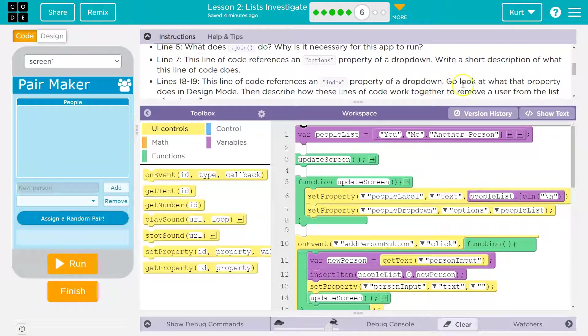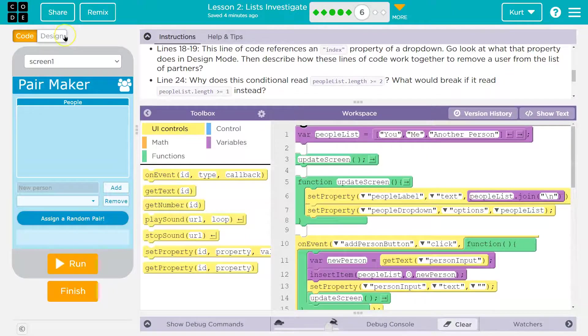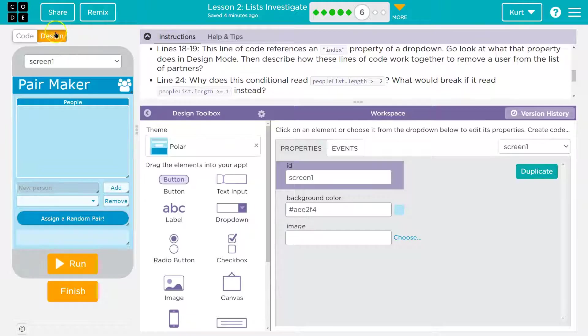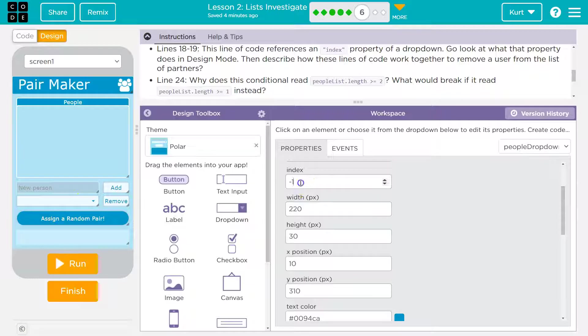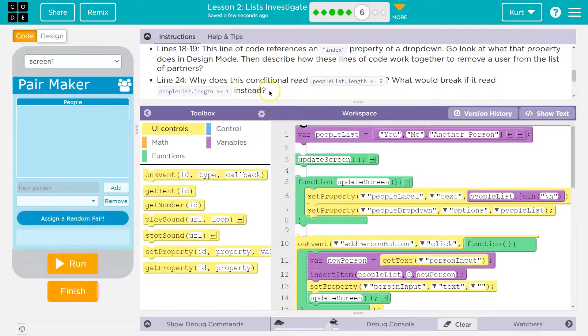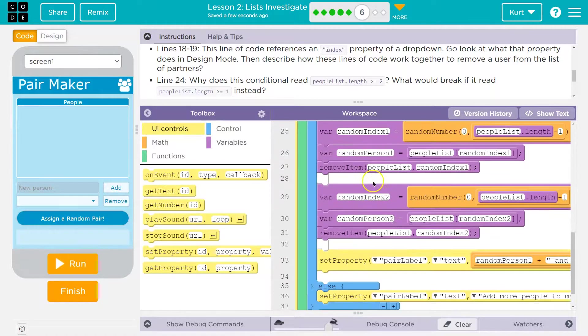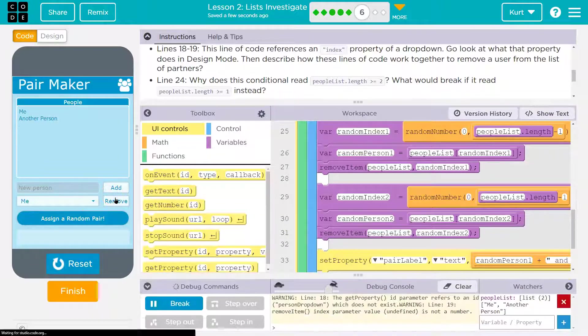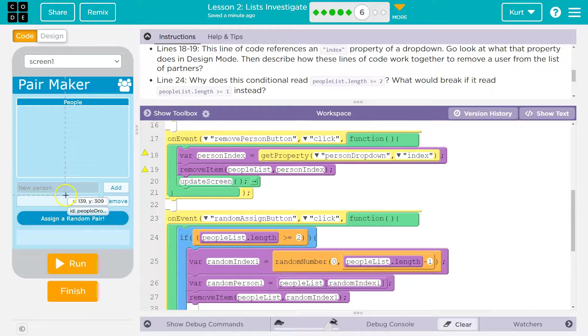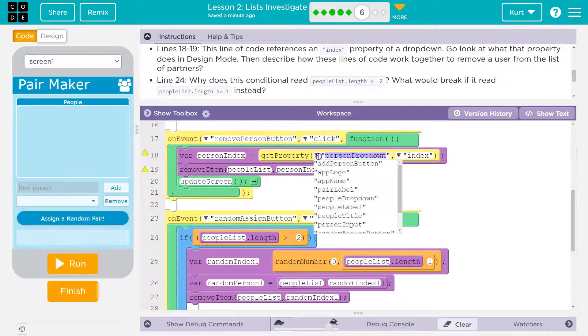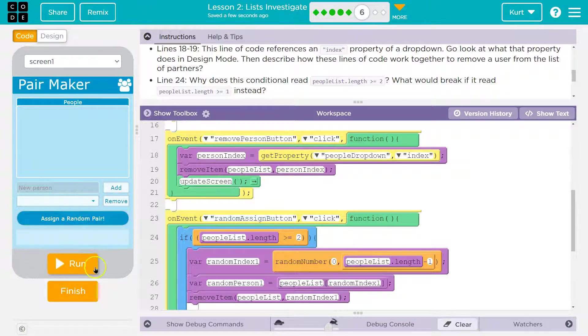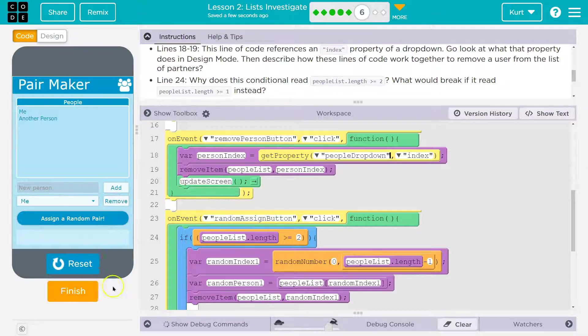The code refers to index property of a dropdown. Go look at what the property does in design mode. Then describe these lines of code work together to remove a user from the list of partners. Okay. So here's the design mode. Here's our people drop down. Index is negative one right now because there's no one on the list. And then what's it saying? Oh, how do they work together to remove a person? Well, let's see. Well, it's still having issues. Person drop down menu. Well, that would be the problem. We need people drop down. There we are. Okay. That should do it. And boom, it lets us remove. Cool.